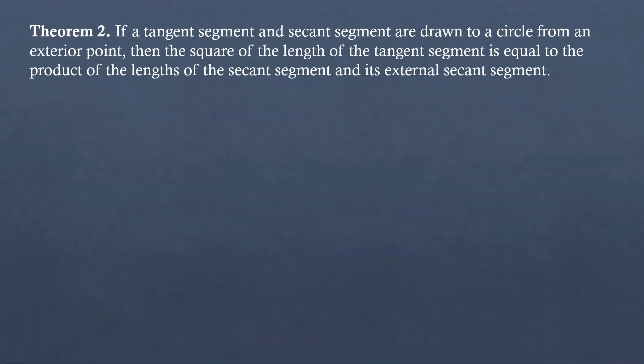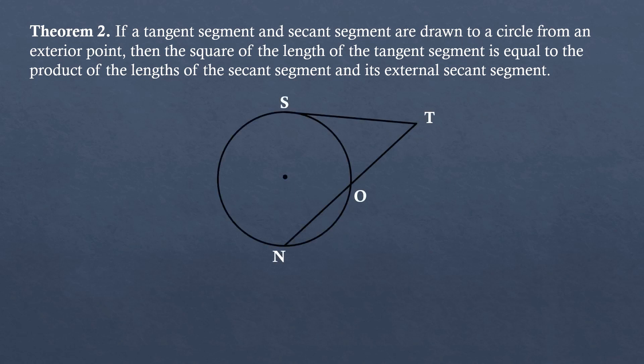Theorem number two: If a tangent segment and secant segment are drawn to a circle from an exterior point, then the square of the length of the tangent segment is equal to the product of the lengths of the secant segment and its external secant segment. From the given figure, the square of tangent segment ST is equal to the product of the secant segment NT and external secant segment OT.